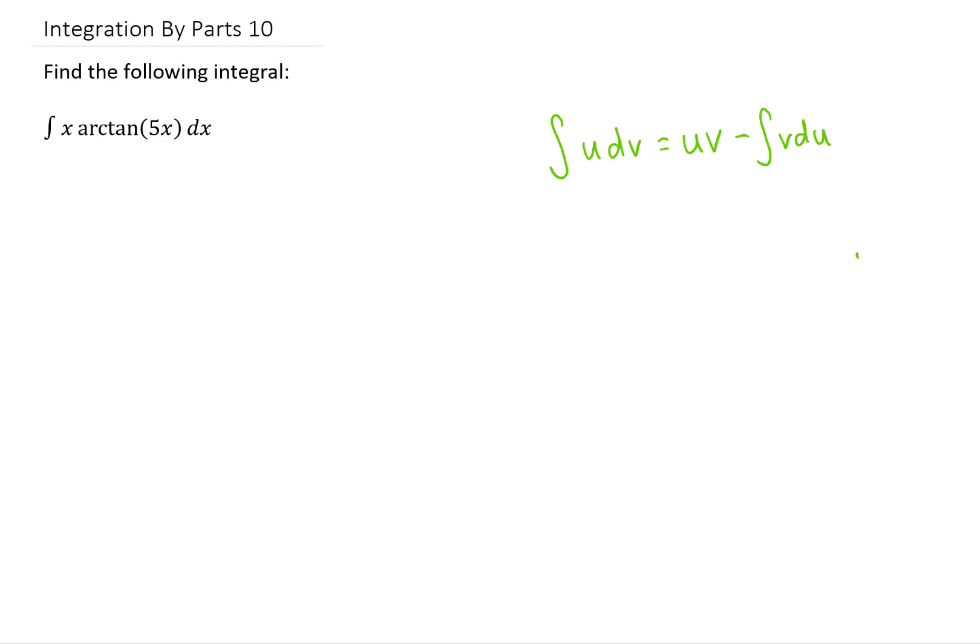This is going to be a multi-step problem, so let's get started. Taking our question from the previous video on this playlist, we're going to use the arctangent of 5x, also known as the inverse tangent of 5x, as our u.